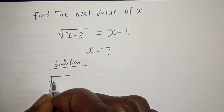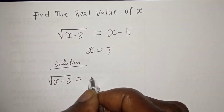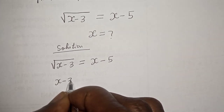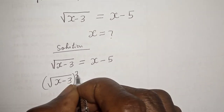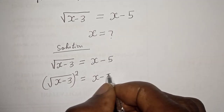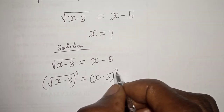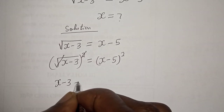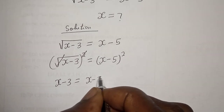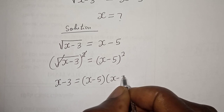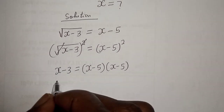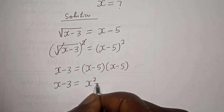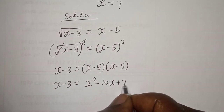We have the square root of S minus 3 is equal to S minus 5. Let's square both sides of this equation. The square root squared will cancel, giving us S minus 3 is equal to S minus 5 multiplied by S minus 5. Expanding: S minus 3 is equal to S squared minus 10S plus 25.